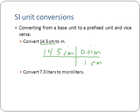Once we've got this, we can go ahead and do our math. Centimeters cancels out, leaving us only with meters. We multiply across the top: 14.5 times 0.01 divided by one. Whenever we do that, we get an answer of 0.145 meters.